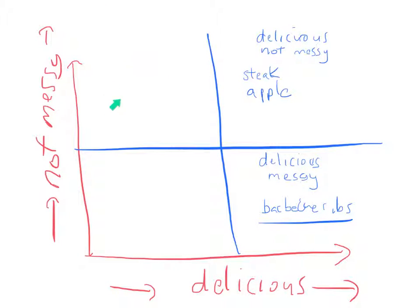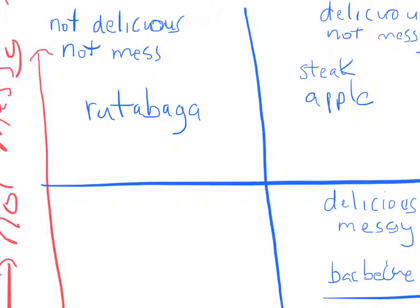What about in this quadrant up here? This is food that's not delicious, but at least it's not messy. An example of that, maybe it would be rutabagas. So there we have our rutabaga. It's not delicious, but at least it's not messy.